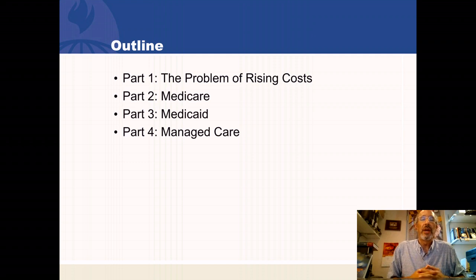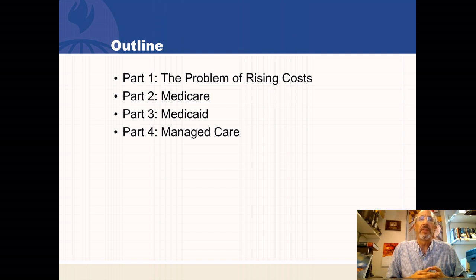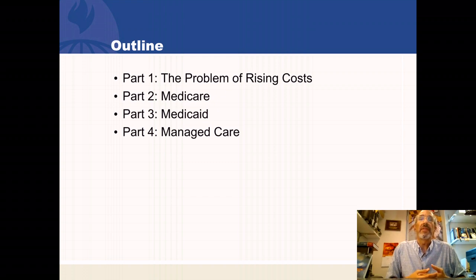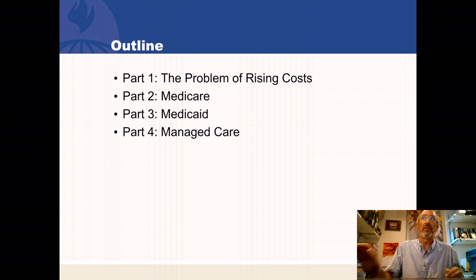The overall structure is to show how the problem of high costs and rising costs has led to a variety of federal initiatives, as restraining rising costs is one of the main objectives of health care policy. There are other objectives besides controlling costs — one obviously wants to make the population healthy, limit out-of-pocket payments, do risk protection, and treat people with dignity. However, the problem of rising costs drives many developments in Medicare, Medicaid, and managed care. So it's important to discuss how we got to this problem of high costs.